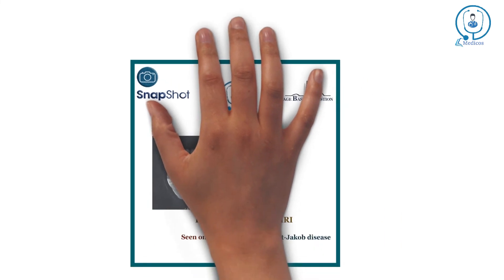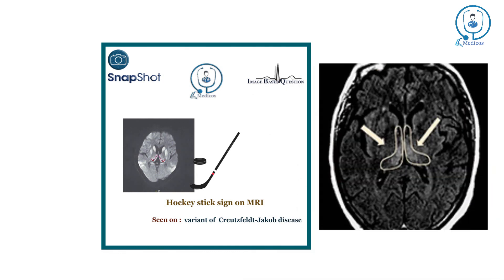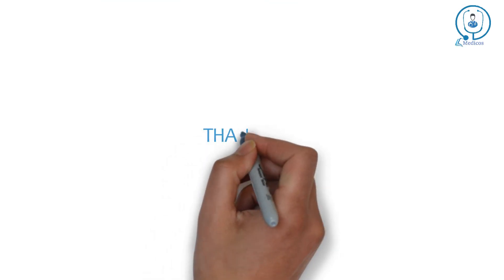Let's talk about our last question. Hockey stick sign on MRI — in which disease is it seen? You can see hyperintense signal involving the pulvinar and dorsomedial thalamic nuclei bilaterally on FLAIR, and it looks like the shape of a hockey stick. It is generally seen in the variant of Creutzfeldt-Jakob disease. Thanks for watching this video. Stay tuned for the next episode on image-based questions.